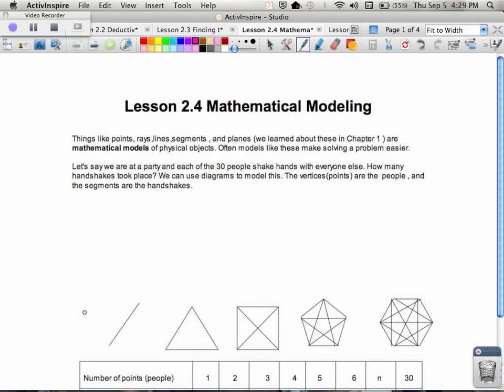In Lesson 2.4, we're going to do some more mathematical modeling. Things like points, rays, lines, segments, and planes we learned about in Chapter 1 are called the mathematical models of some physical objects. And often, models make solving a problem easier.